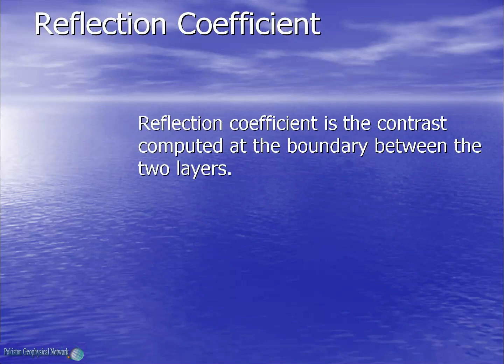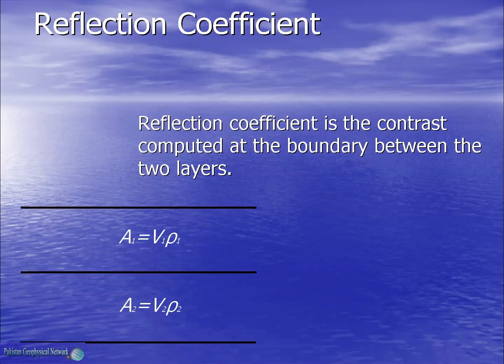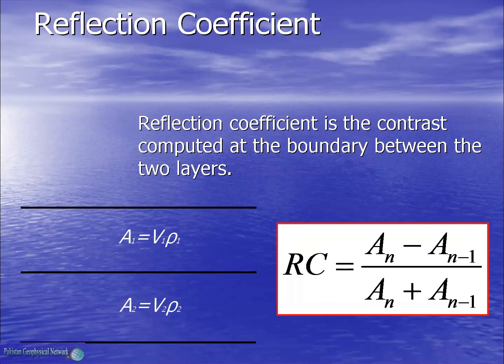We introduce another term, reflection coefficient, which is the contrast computed at the boundary between the two layers. We have two layers with velocities and densities, and their products would give us the acoustic impedance. Then we can compute the reflection coefficient using this simple equation, and this would be the reflection coefficient for a zero incidence wave.